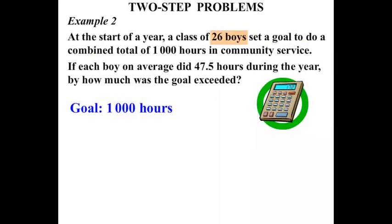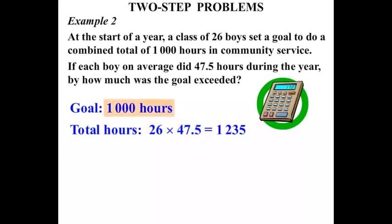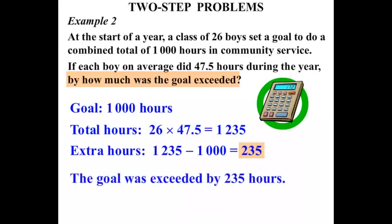26 boys each on average did 47.5 hours, so the total hours would be 26 lots of 47.5. Using the calculator, we get 1,235. Now the goal was 1,000 hours and the boys put in 1,235 hours. So the extra hours — we do a subtraction to find the difference — and that works out to be 235. The goal was exceeded by 235 hours.